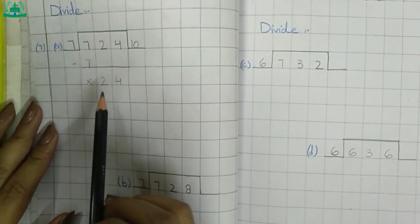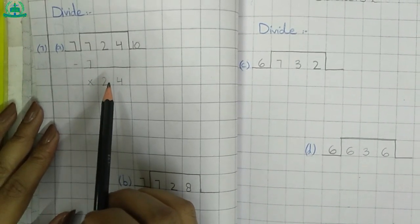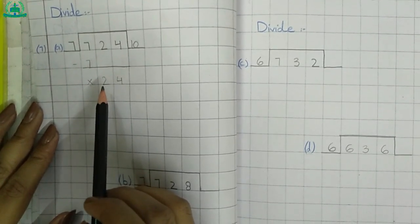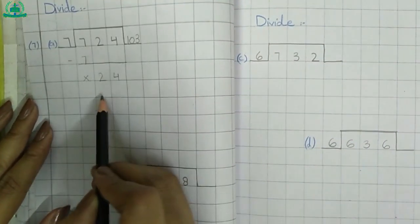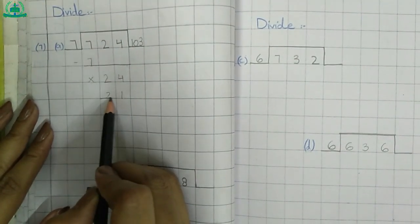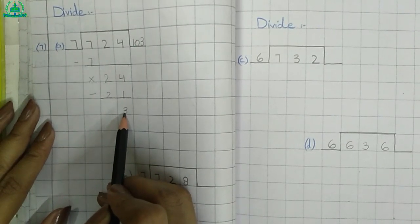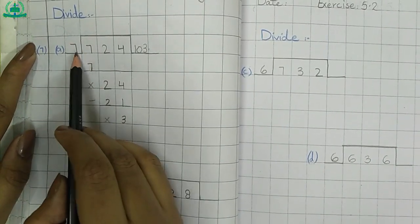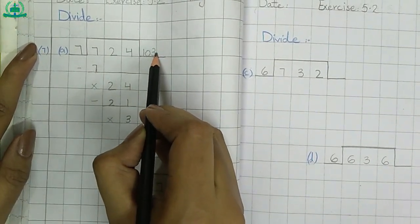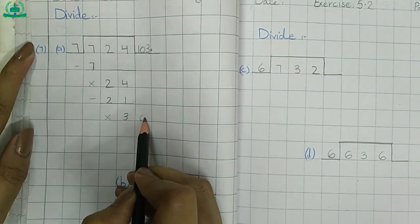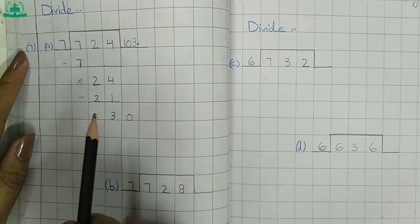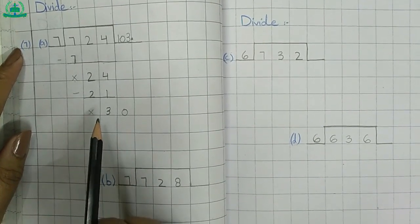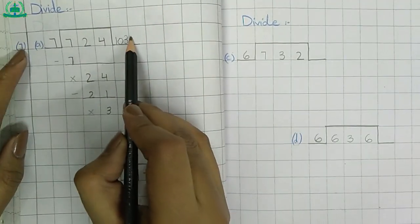How many times do we need 7 to make 24? 7 times 3 is 21, and 7 times 4 is 28. 28 is greater than 24, so we take 21. 7 times 3 is 21. Minus: 4 minus 1, remainder is 3. 2 minus 2, no remainder. 3 is smaller than 7, so we add a decimal point and bring down 0. How many times do we need 7 to make 30? 7 times 4 is 28, and 7 times 5 is 35. 35 is greater than 30, so we take 28. 7 times 4 is 28.